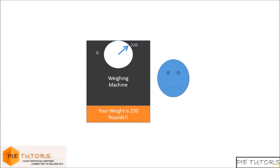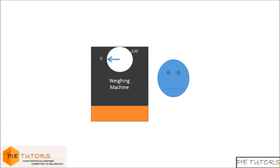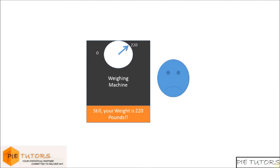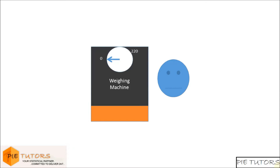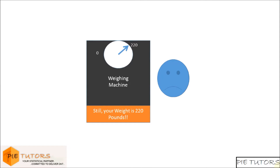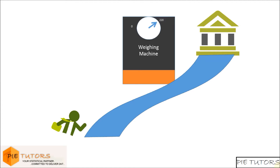You don't believe the machine and decide to weigh again. Again, the machine shows you that you weigh 220 pounds. You still don't agree with the machine, but you decide to weigh again for the last time. Still, the machine shows that you weigh 220 pounds. We can surely say that the machine is not accurate, but we can see that the machine gives consistent readings, averaged around 220 pounds. This weighing machine is consistent but not accurate. This scenario is analogous to a reliable but invalid measure.